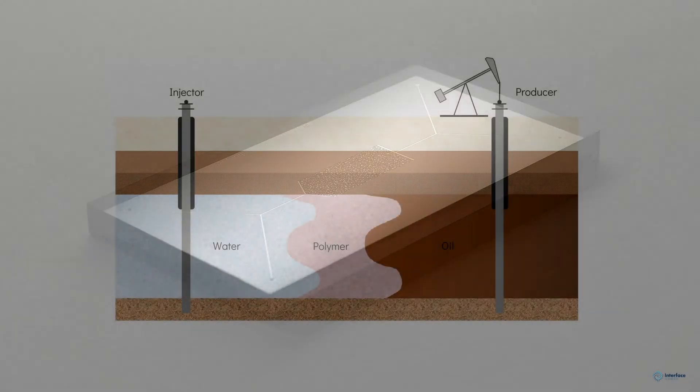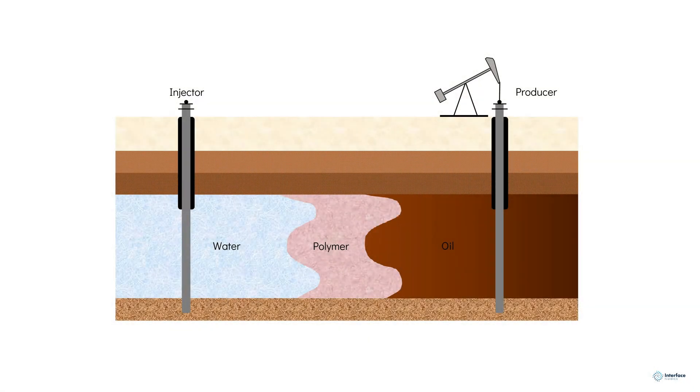Polymer flooding is one type of enhanced oil recovery process where polymer effectively thickens the injected water to reduce the mobility ratio between water and oil phases. The effect of polymer addition is that water does not finger through the reservoir, rather a well-developed sweep front like this occurs.